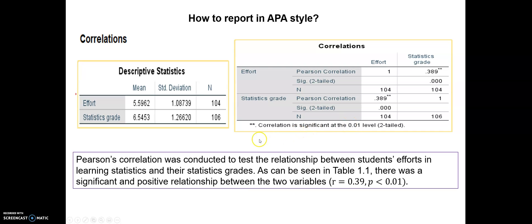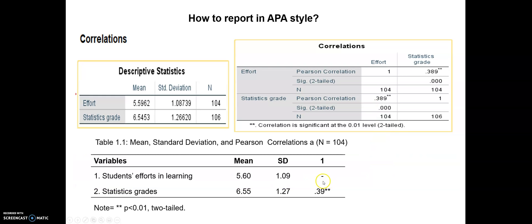So how can we interpret all this information? Pearson correlation was conducted to test the relationship between students' efforts in learning statistics and their statistics grade. As can be seen in the table, there was a significant and positive relationship between the two variables. The correlation coefficient comes from here, and the p-value comes from here. We have a positive relationship, which means that when students' efforts in learning increase, their grades also increase.